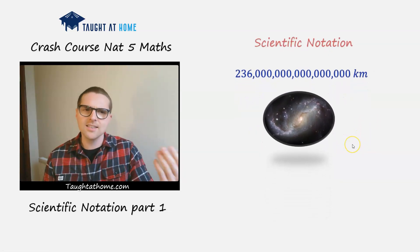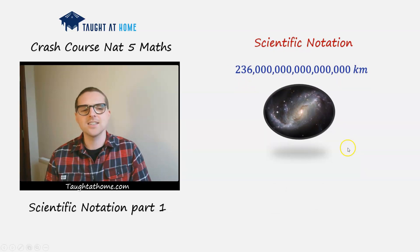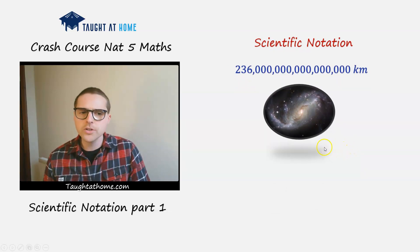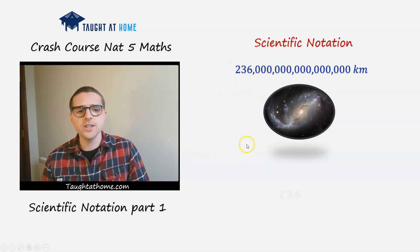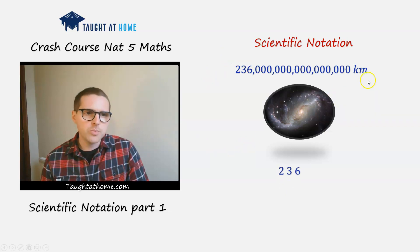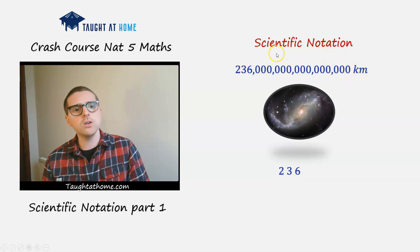And I'll start with an example. Let's take this distance of a galaxy here. What we're going to do is we're going to take the three significant figures here. And we're going to take the decimal point which is at the end here and we're going to shift it all the way between the two and the three there.